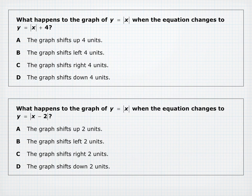For Y equals absolute value of X changing to Y equals absolute value of X plus 4 (outside), the graph shifts up 4 units. When it changes to Y equals absolute value of (X minus 2) (inside), because we are subtracting on the inside, the graph shifts to the right 2 units.